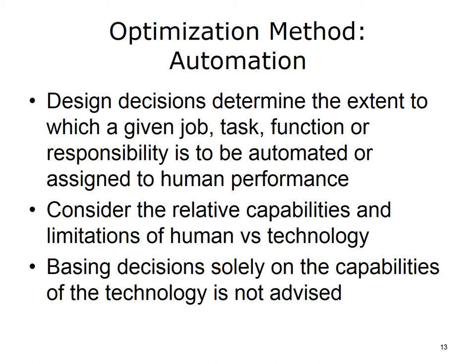Automation means designing processes so that machines — i.e., computers — can do them rather than humans. Things that may lend themselves well to automation are those that can be completely defined, performed in identical fashion each time, and are sufficiently repetitive that the automation efforts are cost-effective. Design decisions related to this allocation of function determine the extent to which a given job, task, function, or responsibility is to be automated or assigned to human performance. The decisions are based on many factors, including the relative capabilities and limitations of humans versus technology in terms of reliability, speed, accuracy, strength, flexibility of response, and financial cost.